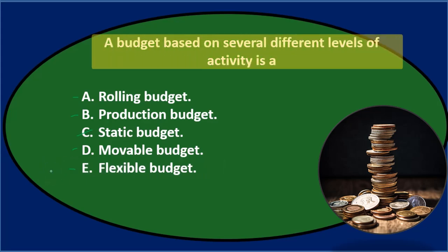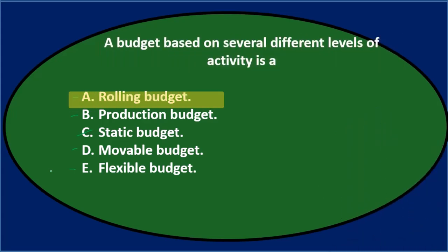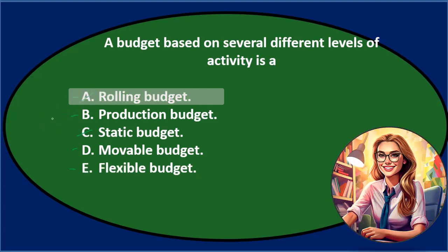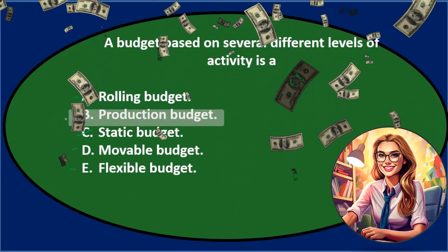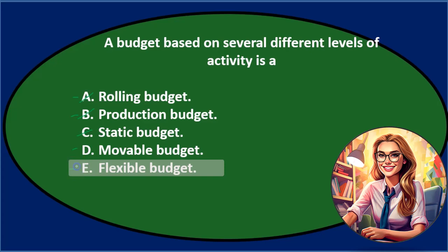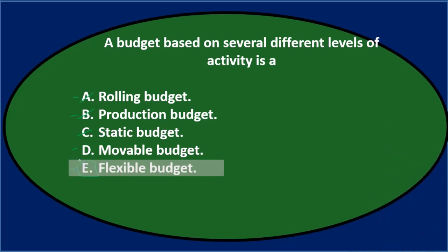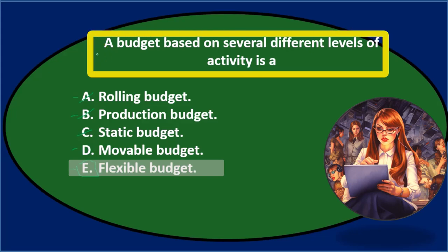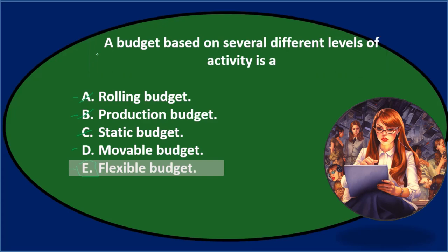Let's go through again. The rolling budget has to do with the timing — how far out we roll it into the future — not different levels of activity. The production budget is a specific-point budget at one level, so it's not B. Between D movable and E flexible, the one that should sound most familiar is a flexible budget. The main distinction is a static fixed budget versus a flexible budget which has that movement. So the final answer is E. Flexible budget.